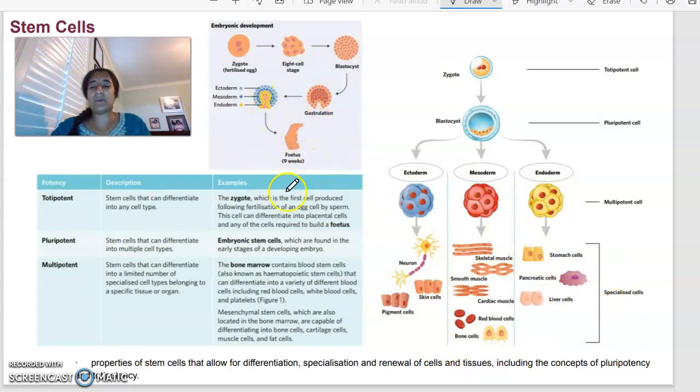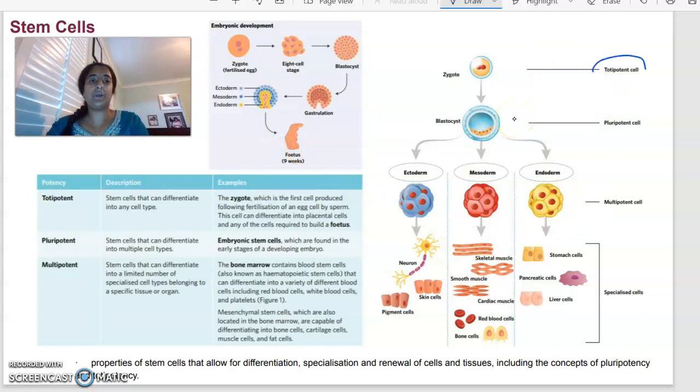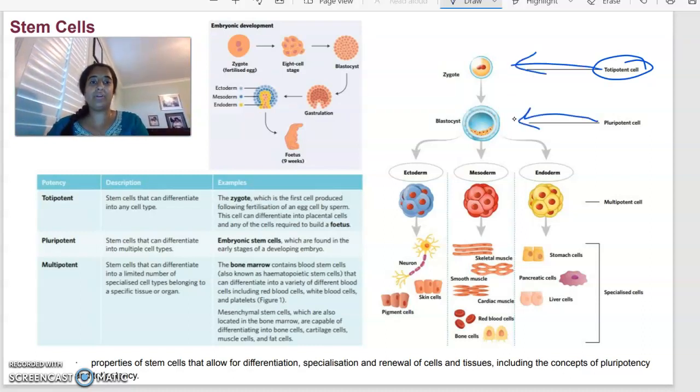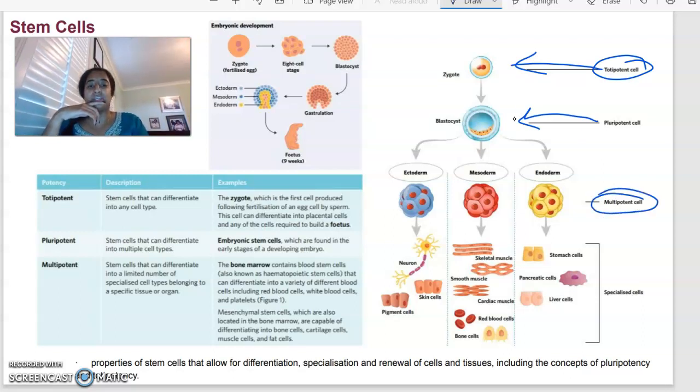So after about nine weeks, this is where we say a fetus has started to form. So those cells have really become specialized. So in terms of talking about totipotent, pluripotent, and multipotent, totipotent cells are the zygote. These can become anything. Pluripotent is where we're splitting into those different germ layers of the blastocyst, where they are going to be limited in what type of cells can be produced from them.